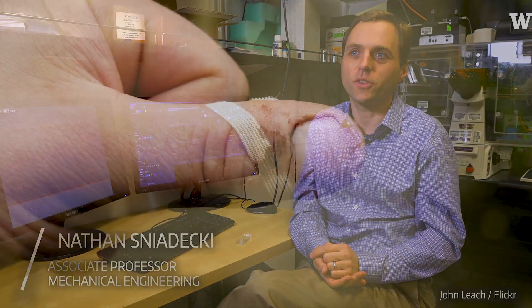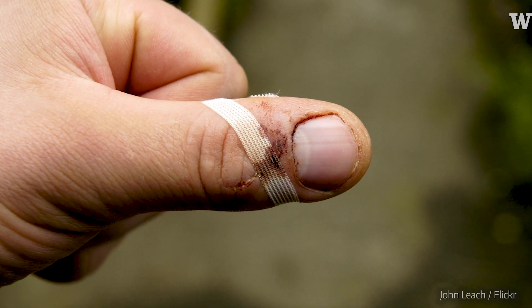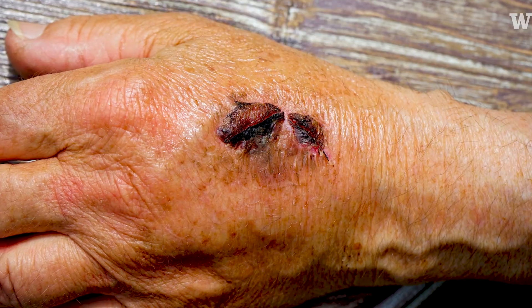Platelets are some of the smallest cells of your body, but they're the first responders to a wound site. So they're the ones that are there to quickly create the scab or the clot that you might see.